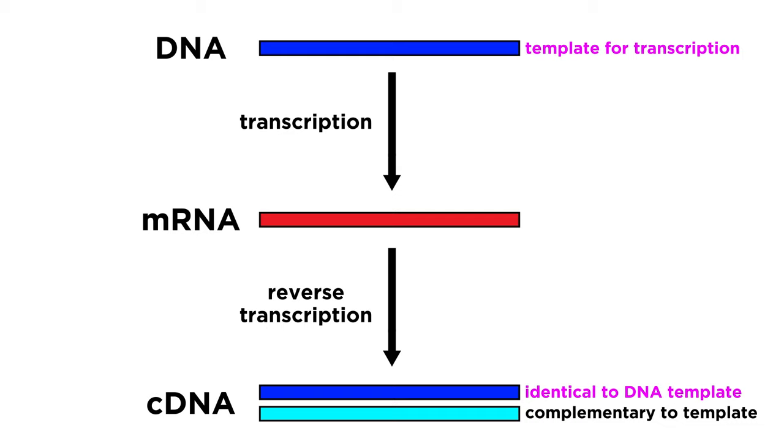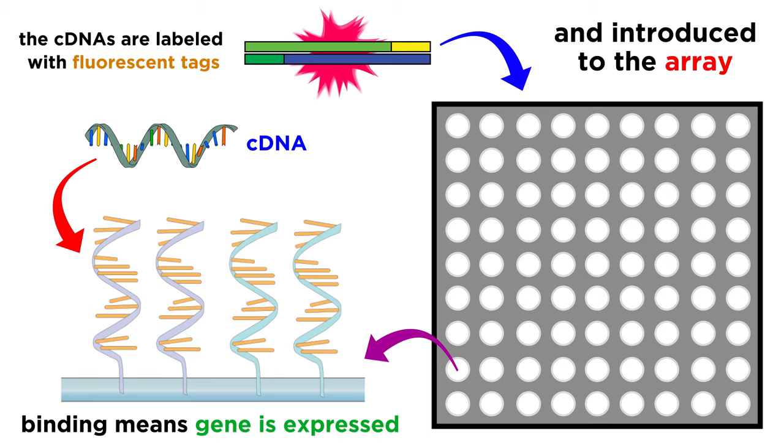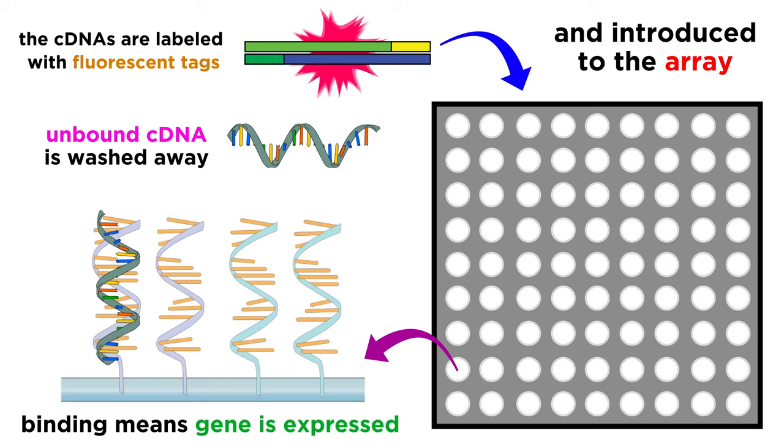Now recall that these cDNAs will have sequences that should be identical to segments of the genes that produced the mRNAs, because DNA is the template for the mRNA during transcription, and the mRNA is the template for the cDNA during reverse transcription. So one of the two strands of some cDNA molecule made from an mRNA ought to bind to the DNA fragment in the particular well that can produce that mRNA in the first place, since they will be highly complementary, and once time is given for hybridization to take place, any cDNA that exhibits little to no binding is washed away.